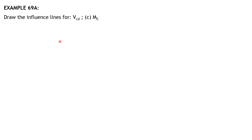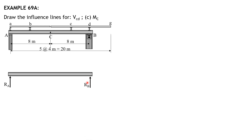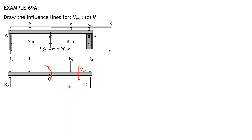Construction of influence line for shear and moment in a girder. Here's the figure. From the free body diagram we have R_A, R_B, then shear in panel CD. We have to find the reactions at A, B, C, D, and shear in panel CD, then the moment at C in the positive direction. We'll have the tabulation later.